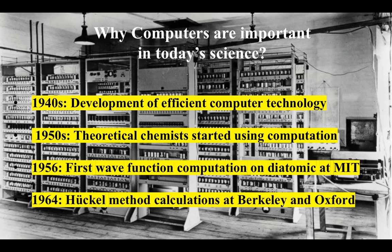Also in 1964, Huckel method calculations, using a linear combination of atomic orbitals known as LCAO, to determine electron energies in pi conjugated systems such as benzene, were generated on computers at Berkeley and Oxford. I've already talked about the Huckel method in another video — you can find the link in the top right corner of this video.